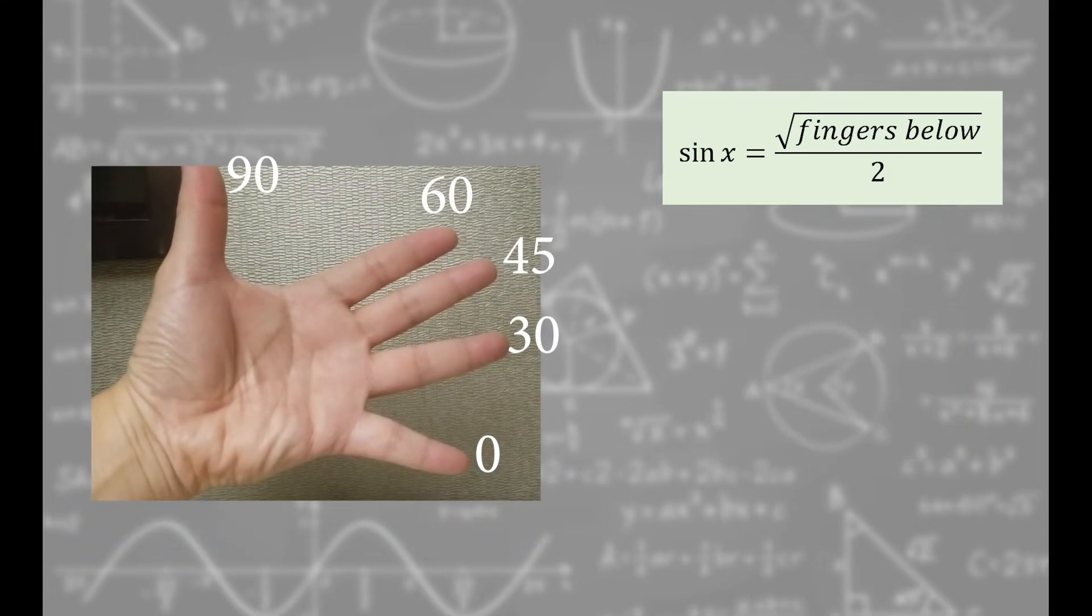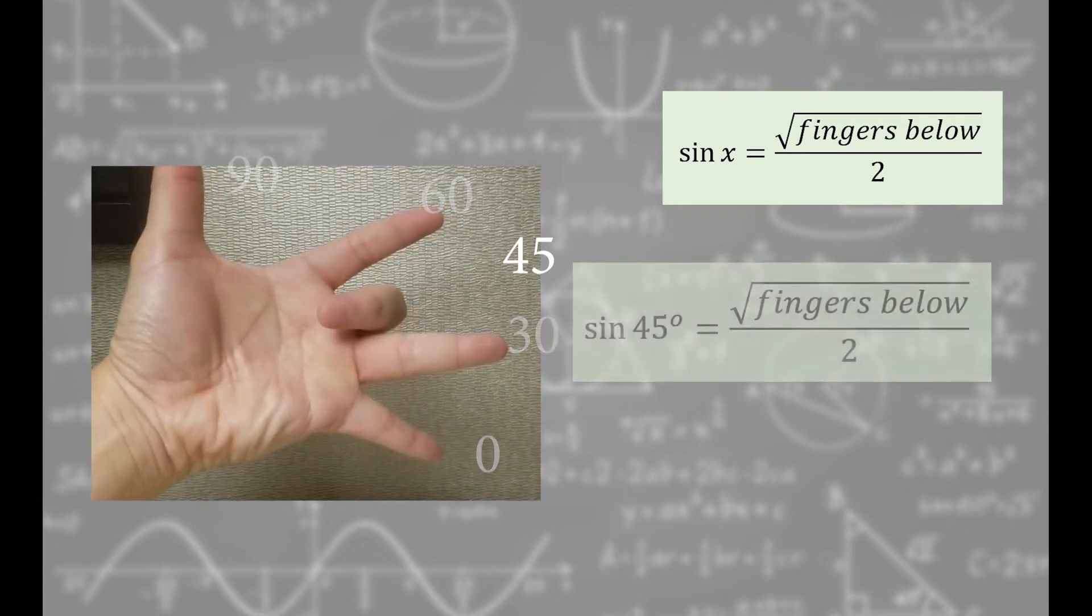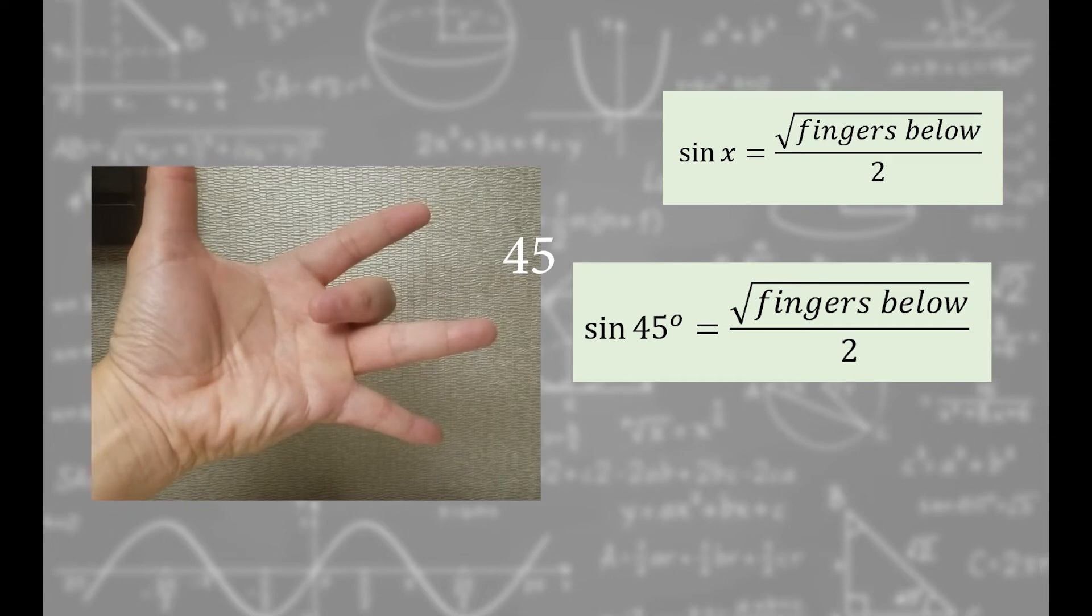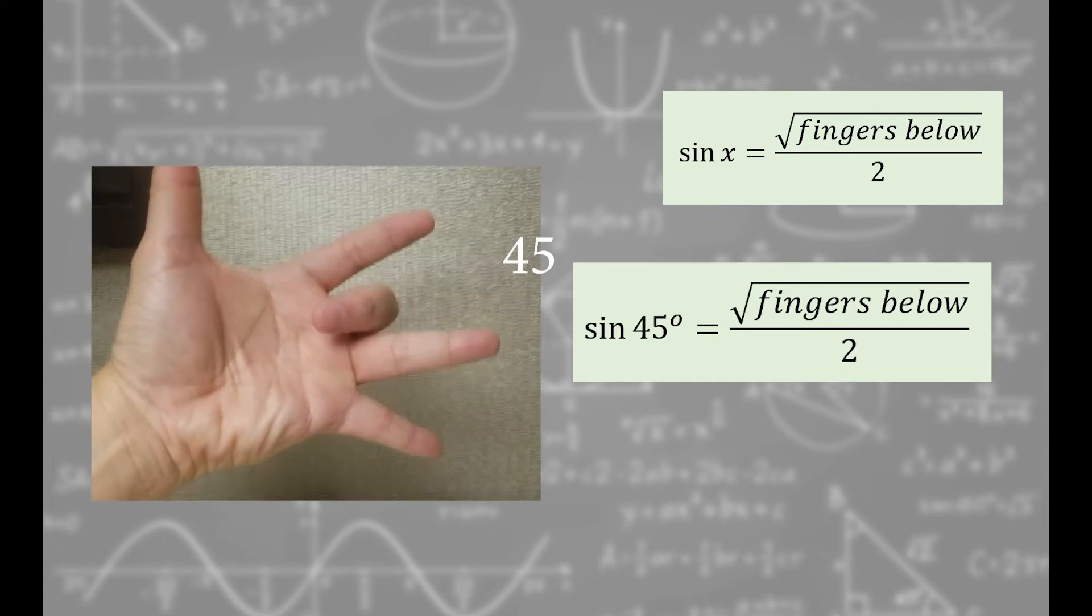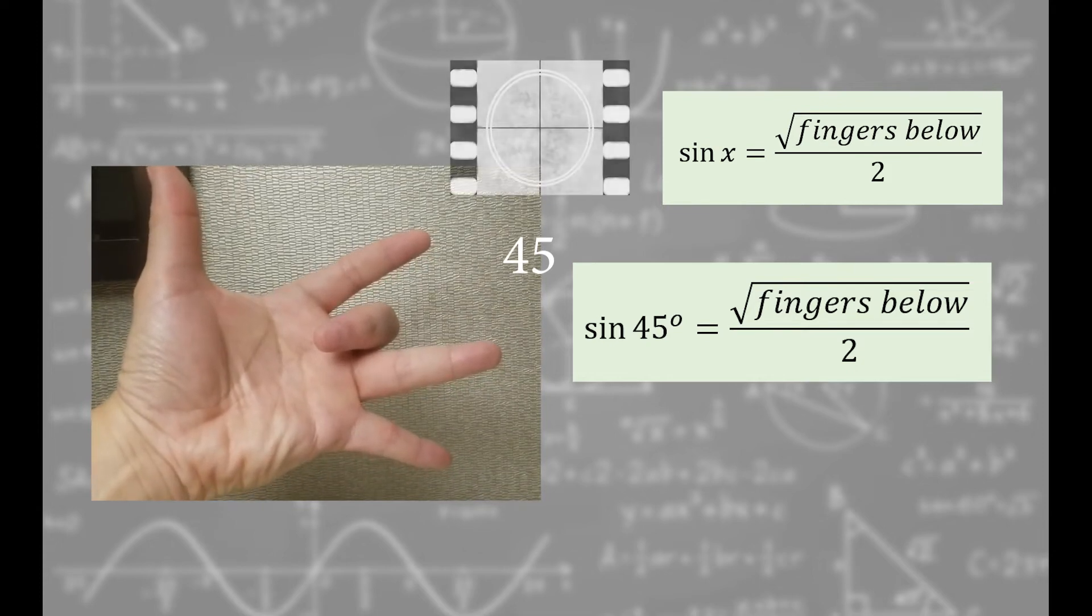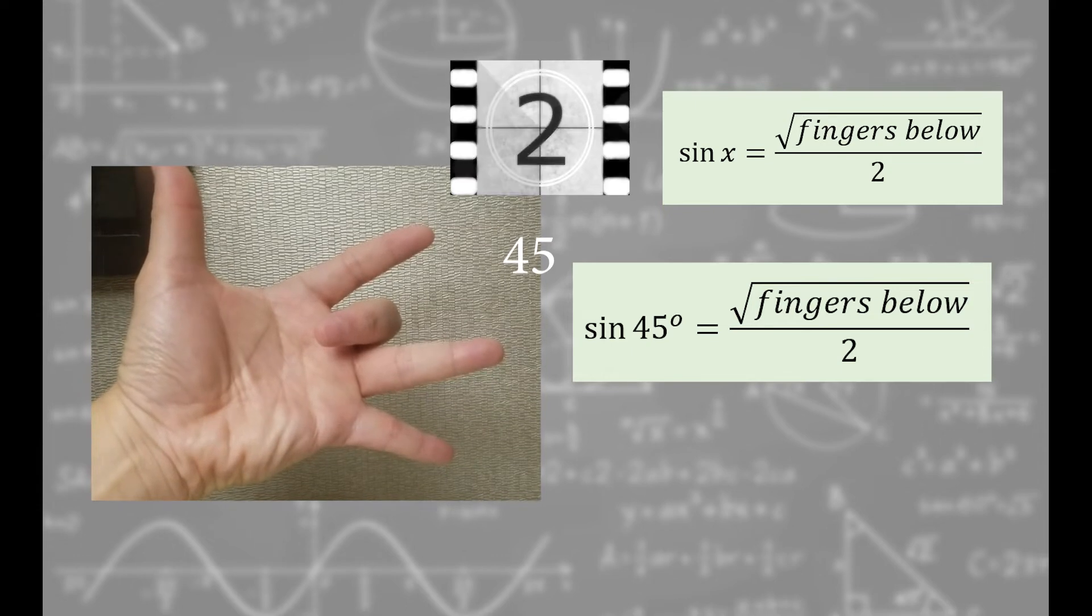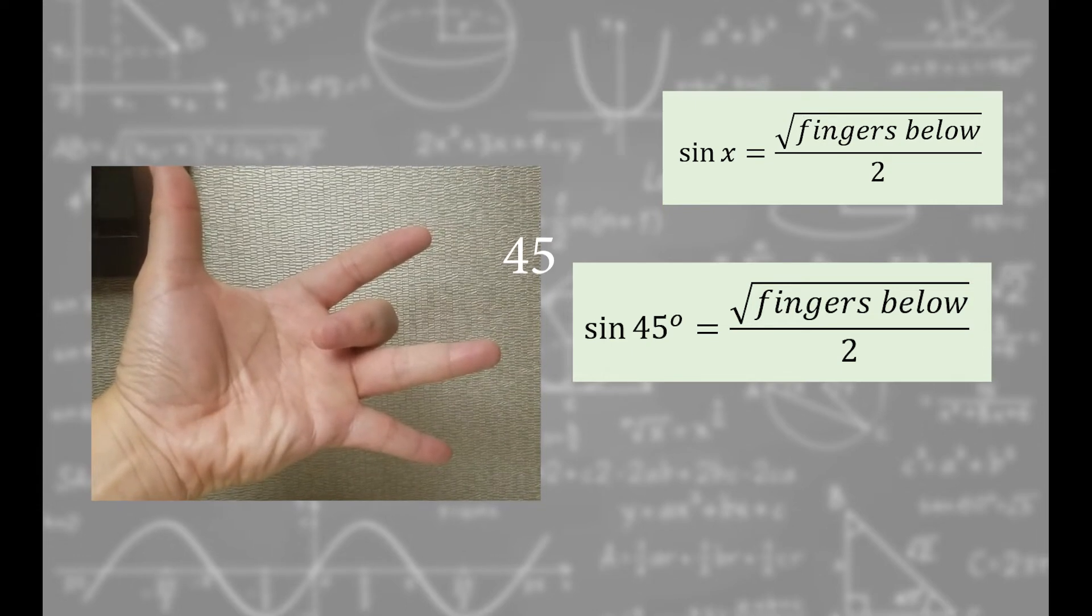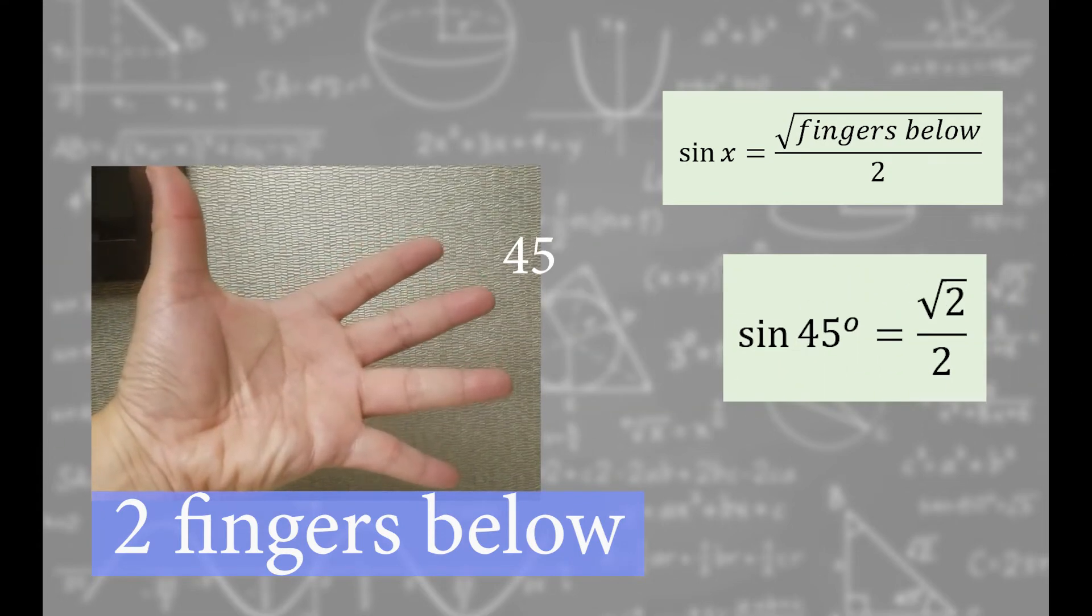Now sine 45 degrees. This finger is 45 degrees. Bend it in and get it out of the way. How many fingers are below it and what is sine 45 degrees? Hit pause and try to figure it out. Square root of 2 over 2. Yes.